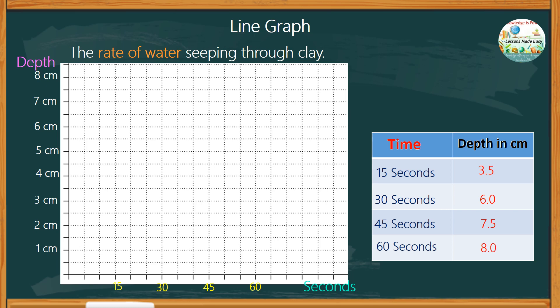To draw a line graph, we need to plot individual items of data into a set of axes. Let's start with 15 seconds and find the point that corresponds with 3.5 centimeters, then mark it with a dot. Do the same with the next one. 30 seconds corresponds with 6 centimeters, then 45 seconds with 7.5 centimeters, and 60 seconds with 8 centimeters. Now that we have identified the individual point, we need to connect each consecutive data point with a line segment.